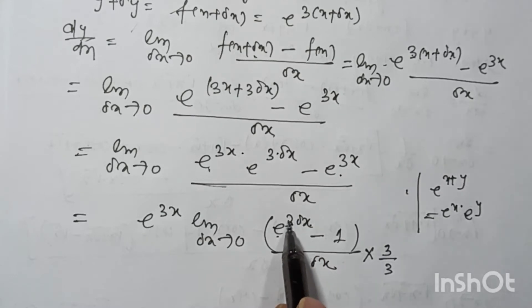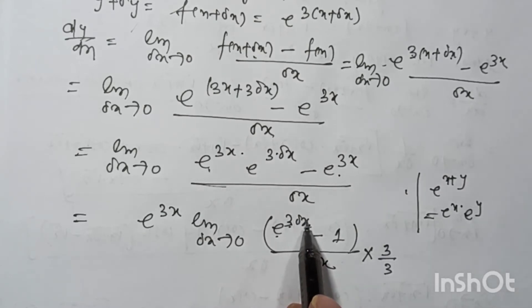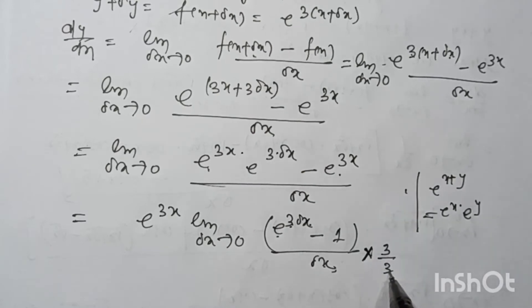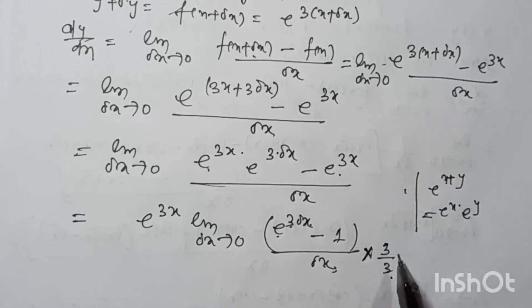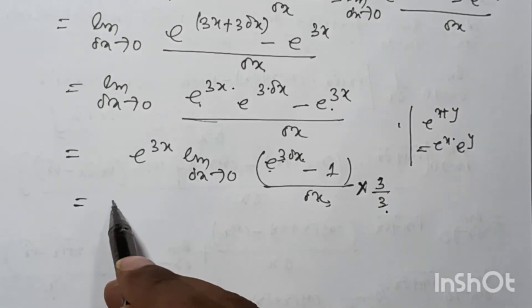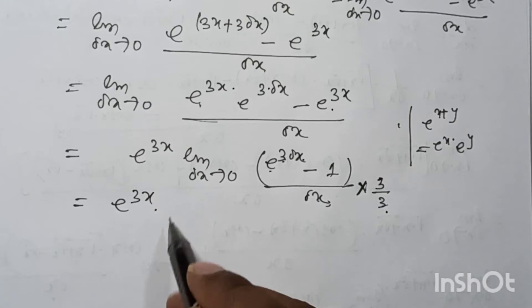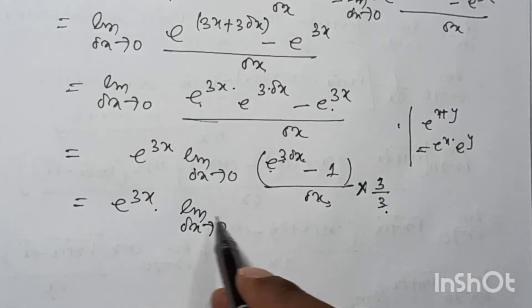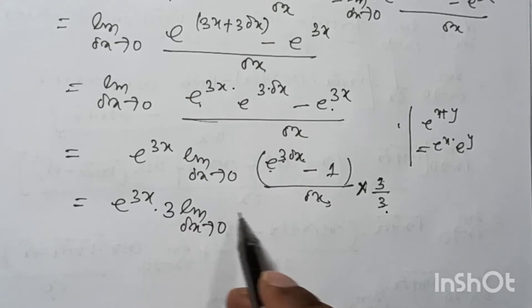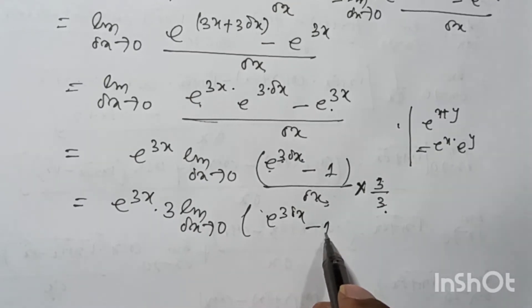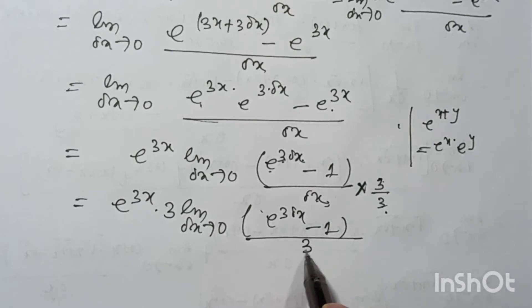We multiply and divide by 3, giving: e to the power 3x times limit as δx tends to 0 of 3 times (e to the power 3δx minus 1) divided by 3δx.